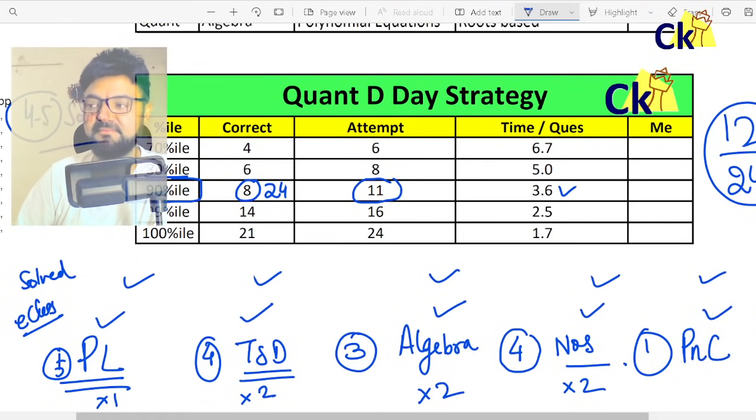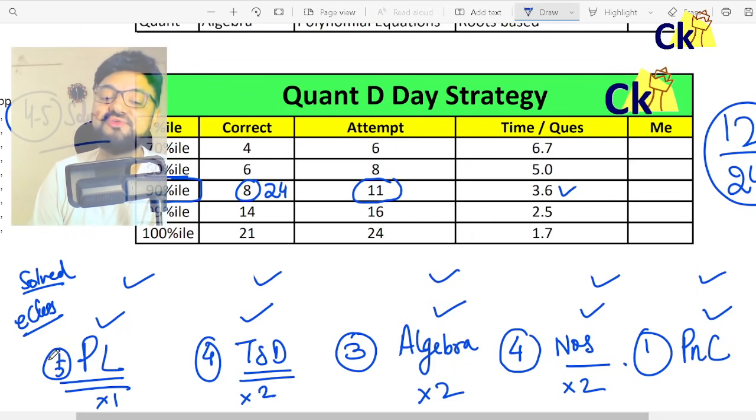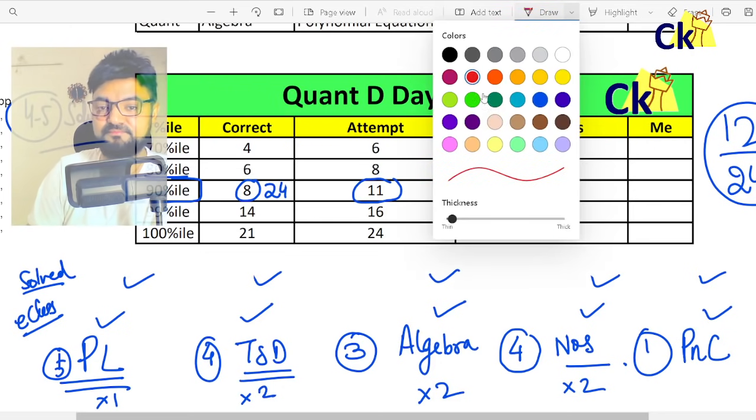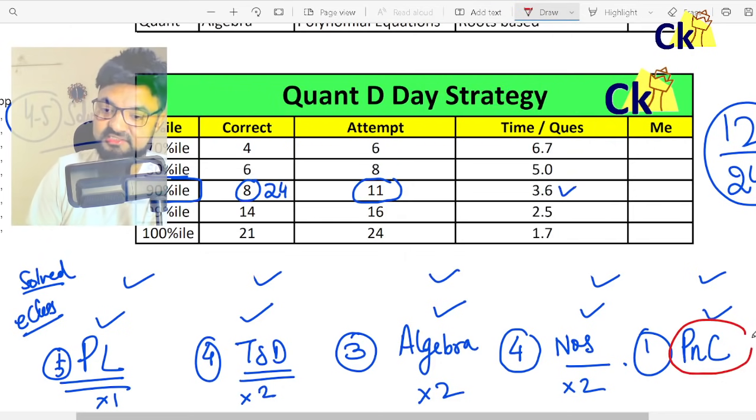So that's a list of five topics which you can avoid for CAT. But my only question is, why won't you do the basic level solved examples, so that in case you get an easy question, at least you can try? How can you say PNC is going to be tough? Yes, I understand last year and 2019, the questions were very tough. 2020 questions were tough. But in 2017, the questions were very easy. So do the easy level at least.